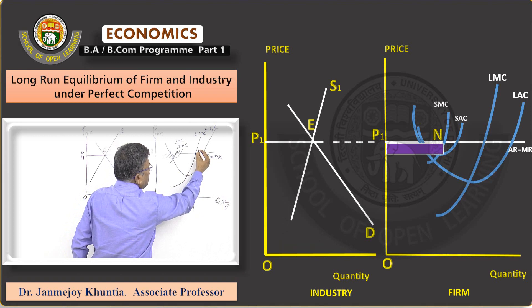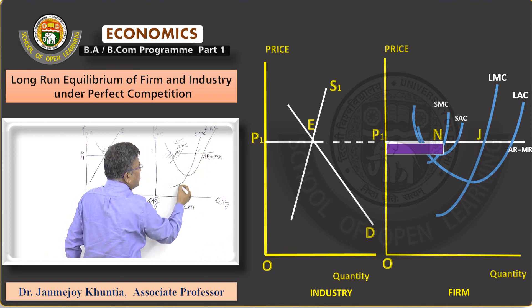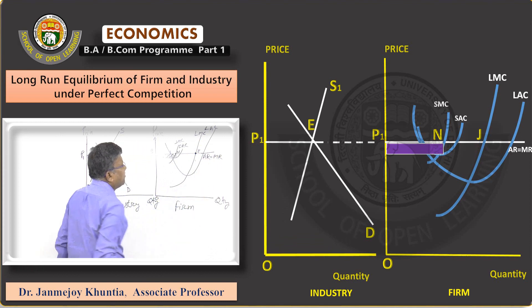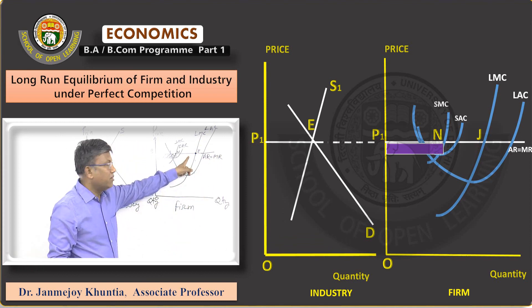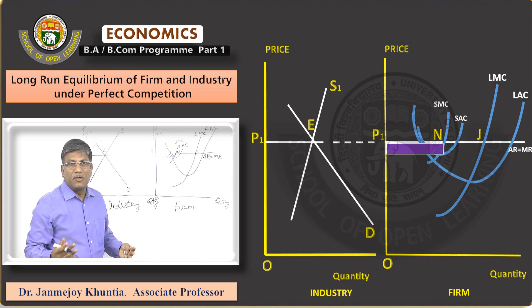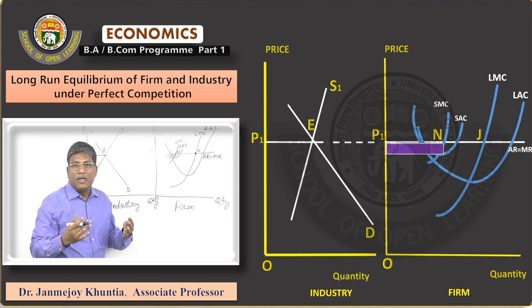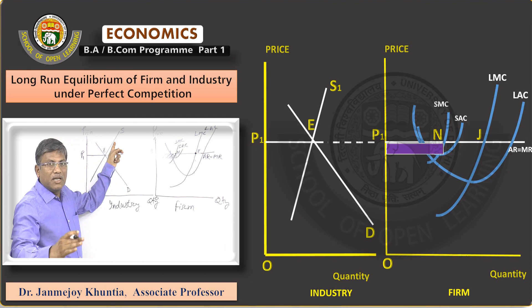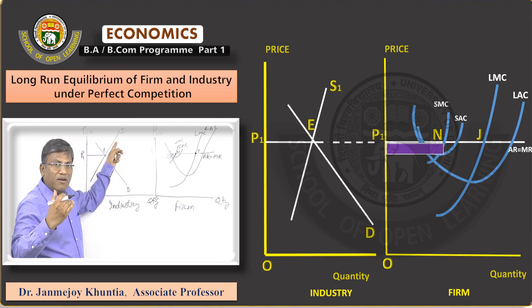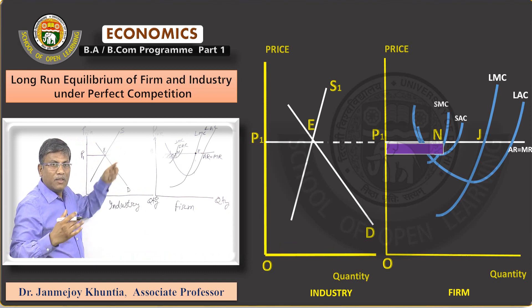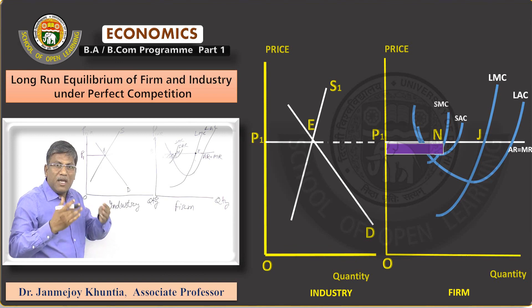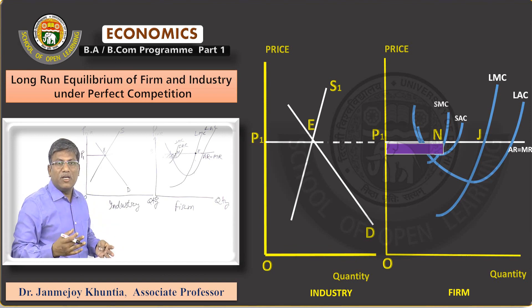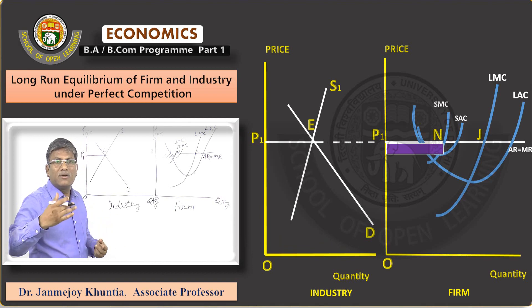But this doesn't happen because of entry. When new firms are entering, industry output is increasing, the supply curve of the industry shifts outward, leading to a fall in price. Due to the fall in price and the fall in abnormal profit, as the process continues, many firms may also leave the industry — those who cannot cope with falling prices — so these adjustments will take place.